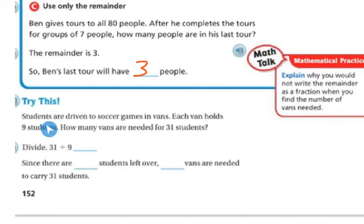Try this. Students are driven to soccer games in vans. Each van holds nine students. How many vans are going to be needed for 31 students? So if I divide 31 divided by 9, well, so 31 divided by 9, 9 times 3 is 27, and 9 times 4 is 36. 36 is too big, so we're going to go with a 3.